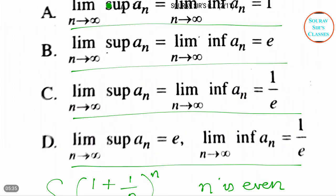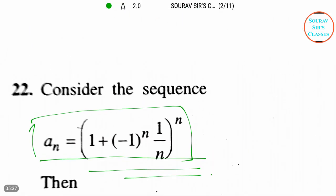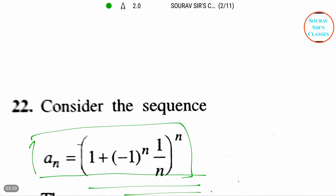Now if we write it like this: limit n tends to infinity. When n is even, 1 plus 1 by n whole to the power n, that is equals to e.